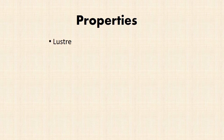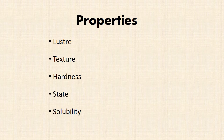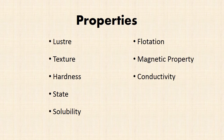Now let us learn about some of the properties based on which materials can be grouped or classified. They are: luster, texture, hardness, state, solubility, flotation, magnetic property, conductivity, and transparency.